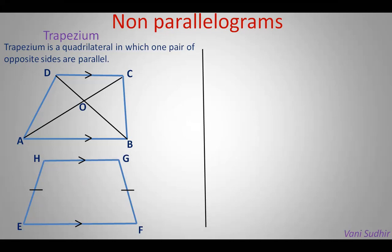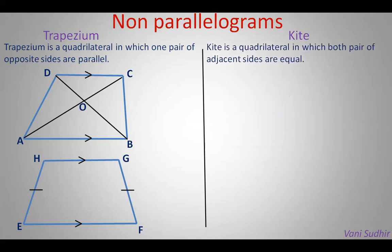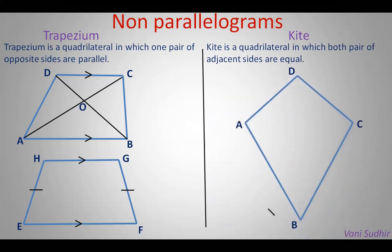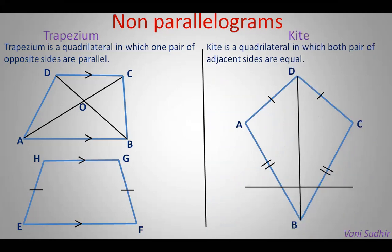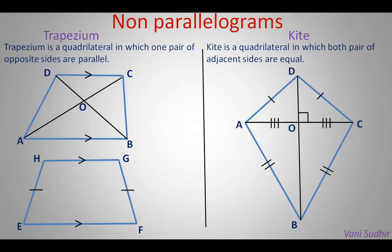Now one more non-parallelogram is a kite. A kite is a quadrilateral in which both pairs of adjacent sides are equal. In kite ABCD, adjacent sides AD and AB are one equal pair, and another pair of adjacent sides AB and BC are equal. The diagonals BD and AC are perpendicular — the angle between them is 90 degrees. BD bisects AC, meaning AO and OC are equal, but AC does not bisect BD, so BO and OD lengths are not the same.